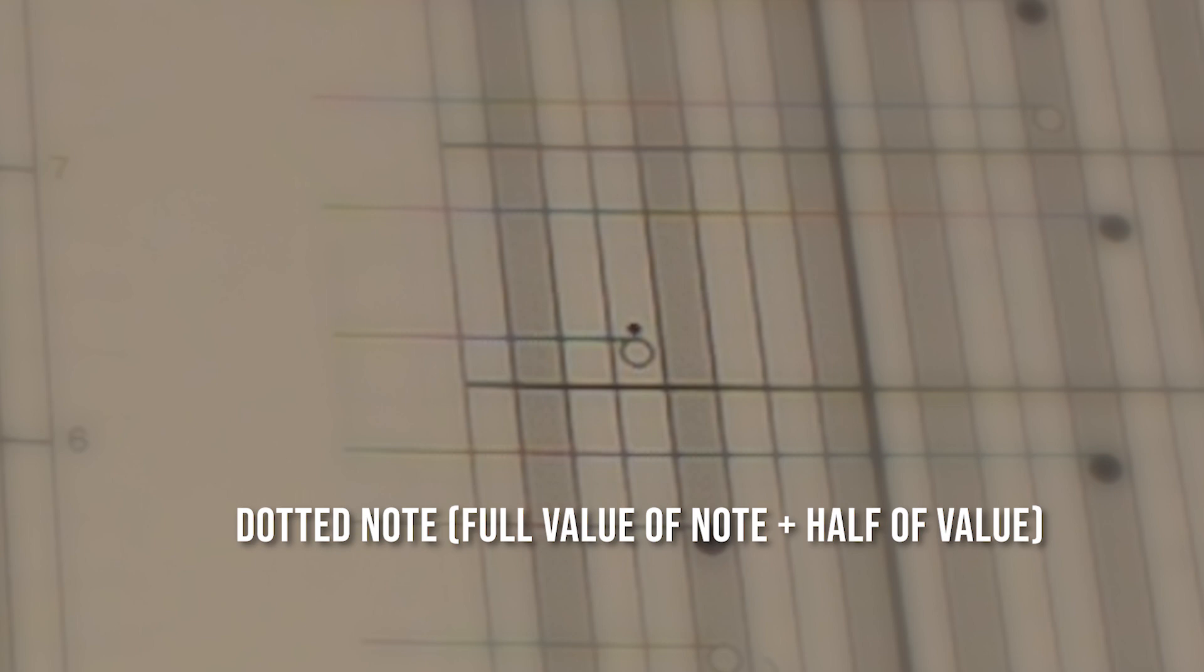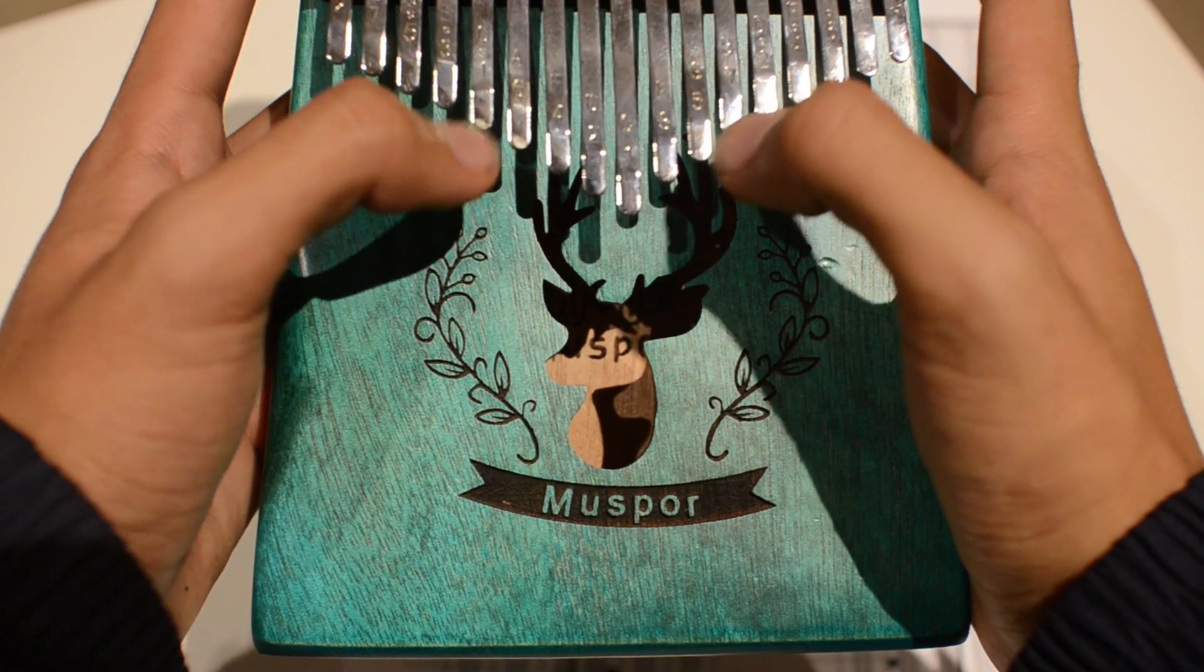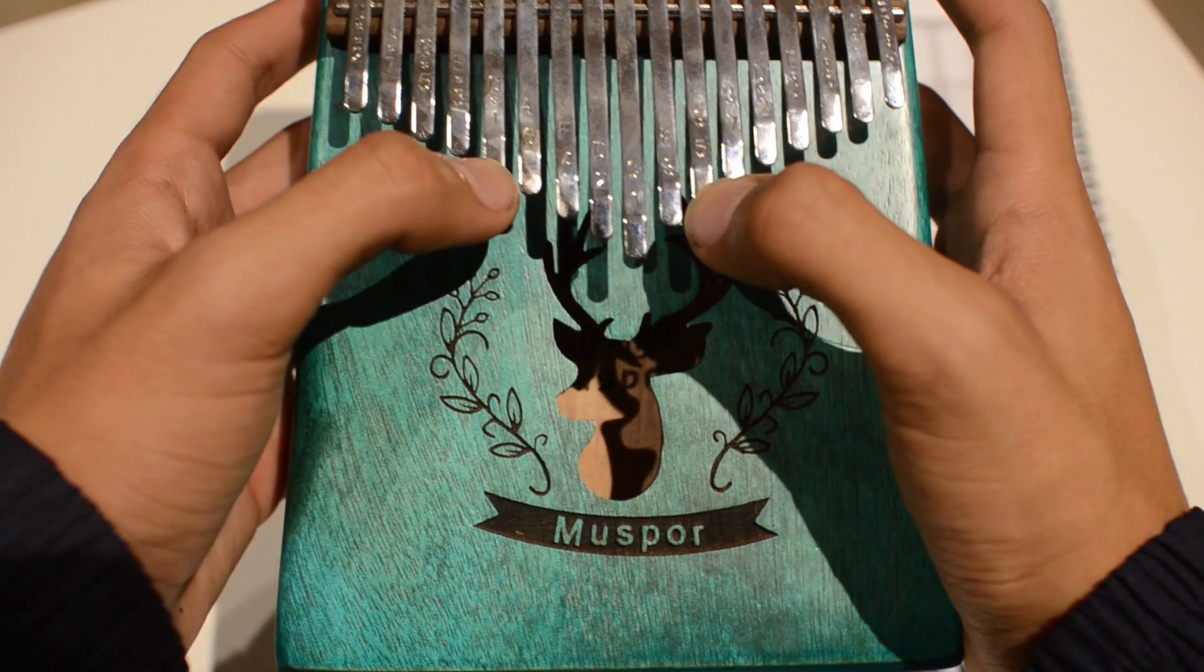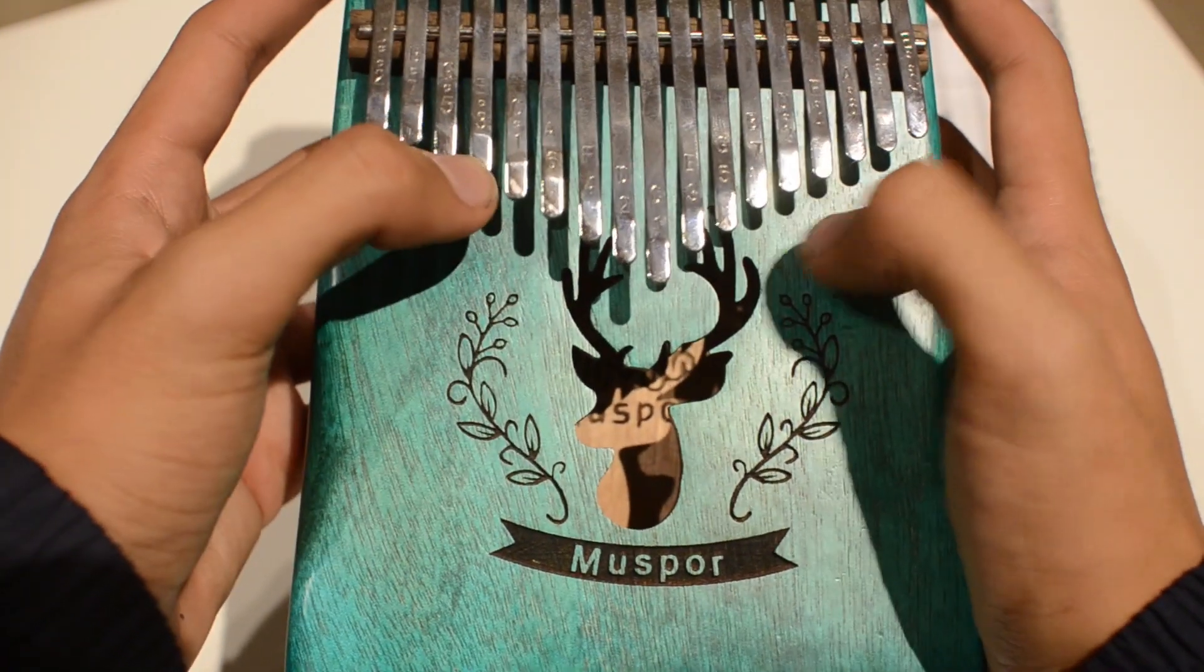It can be a bit confusing at first, but with practice, you'll get to learn it. So, now that you know how to read the tablature, the best way to start learning is to start playing. Try practicing slowly at first, and ease your way into playing the song.